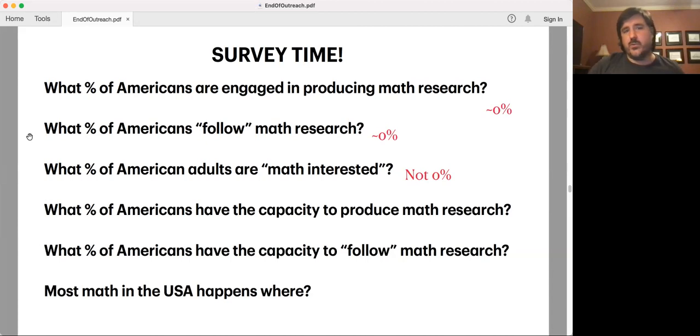A couple more questions. What percentage of Americans have the capacity to produce math research? This is more of a hypothetical. What percentage of Americans have the capacity to follow math research? That is they have the wherewithal, or the background, or the time or energy, whatever you think capacity means. And then finally, where does most math in the USA happen?